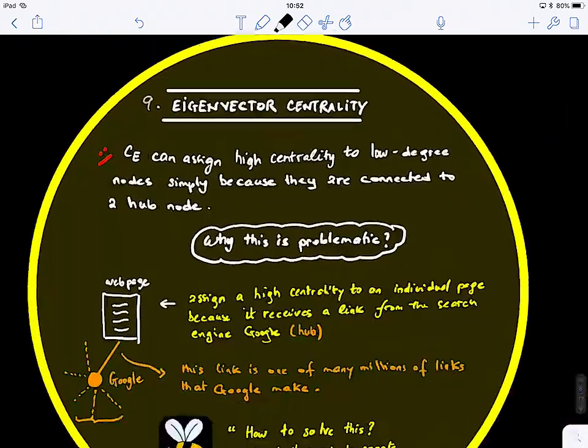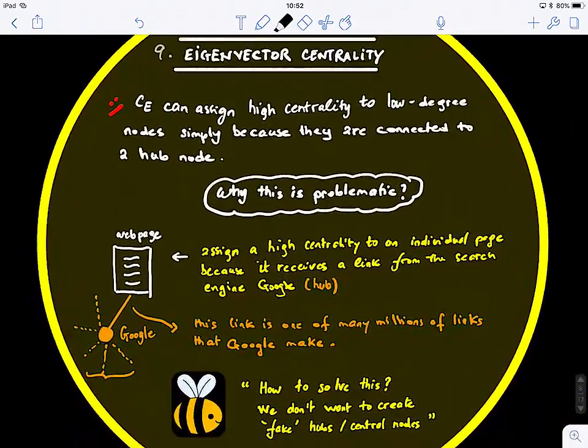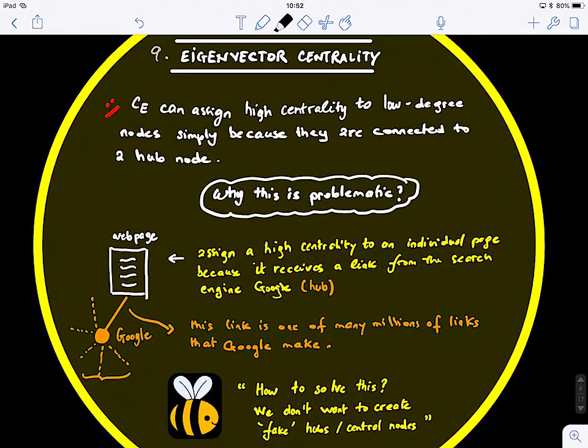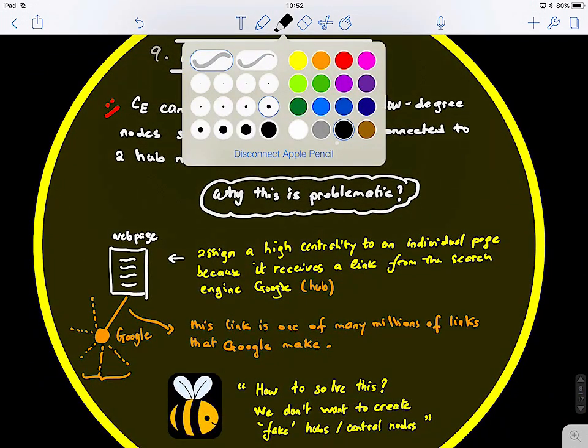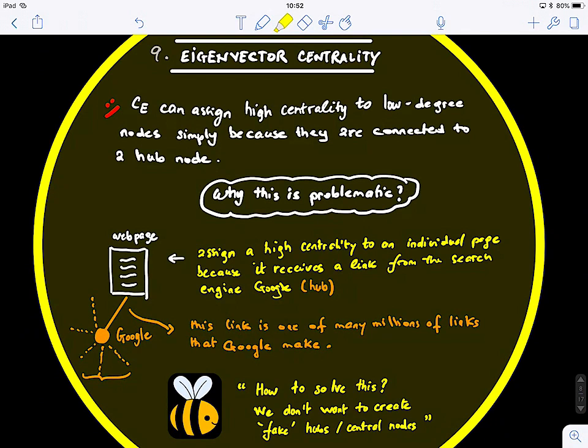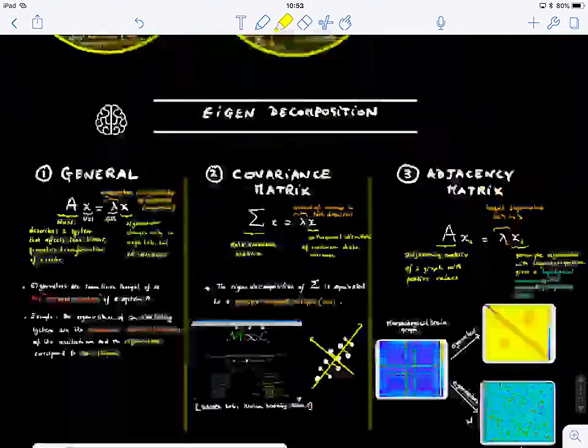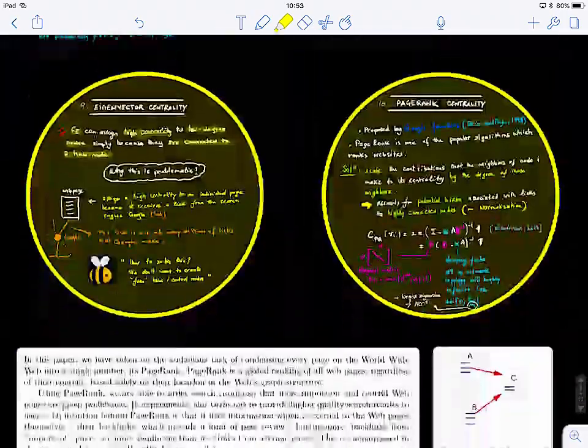Let's go back to this and see if there is a problem with this definition. We have eigenvector centrality that can assign high centrality to low degree nodes simply because they are connected to a hub node. So this is one of the drawbacks of this centrality because if you look at this case, let me see if we find another case.